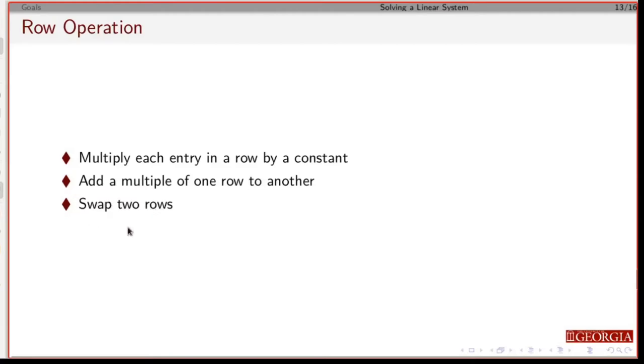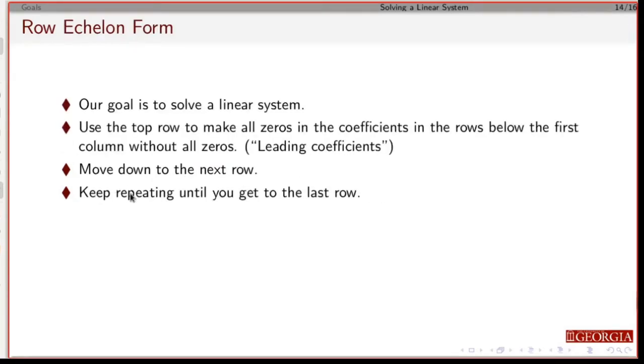So sometimes if you get to a pivot that's zero, you have to swap rows in order to use the new system as a pivot.